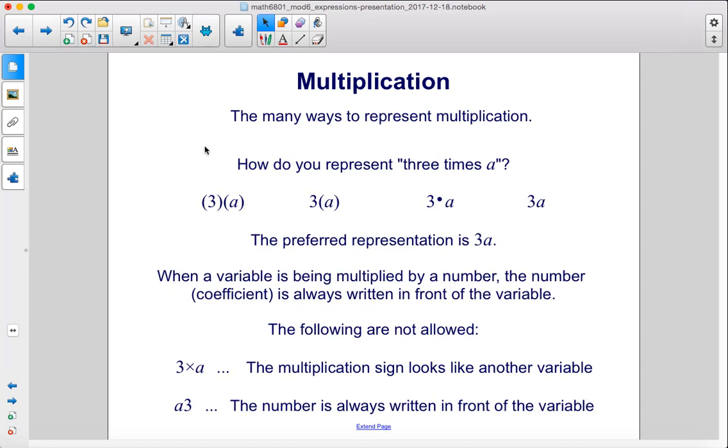The many ways to represent multiplication. How do you represent 3 times a? Well, all of these say 3 times a. We have them both in parenthesis, we have one in parenthesis, we have a dot, but the preferred representation is 3a. When a variable is being multiplied by a number, the coefficient is always written in front of the variable.